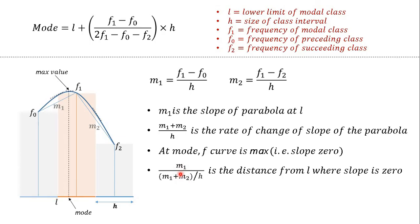divided by the rate of change of slope per unit distance, which is M1 plus M2 divided by h. So in order to get to the mode, we have to add this distance to L. So our mode is L plus this distance.